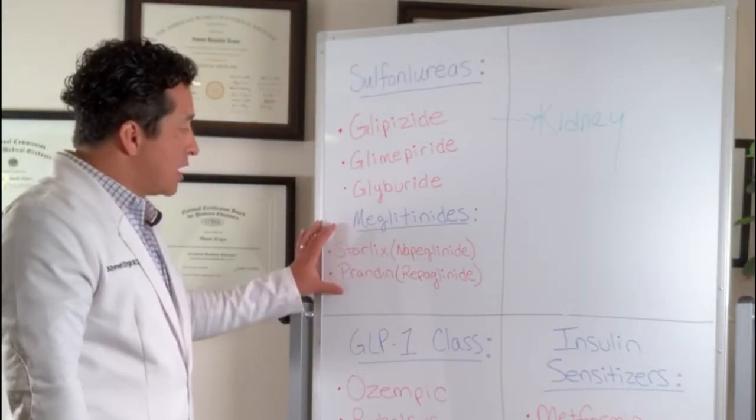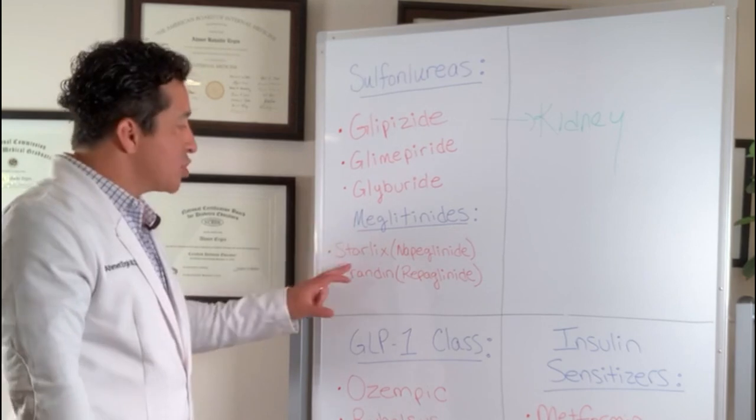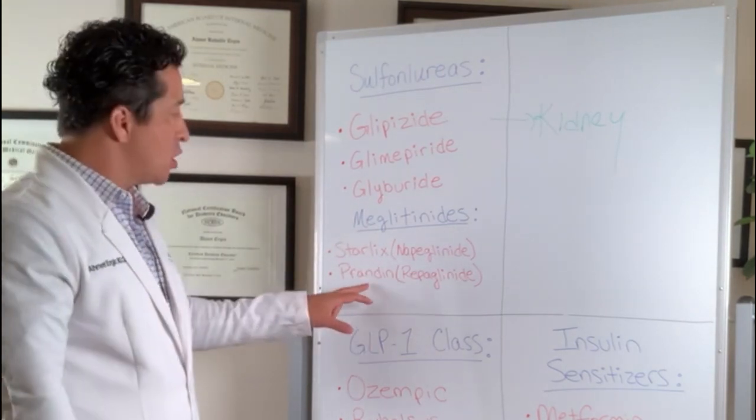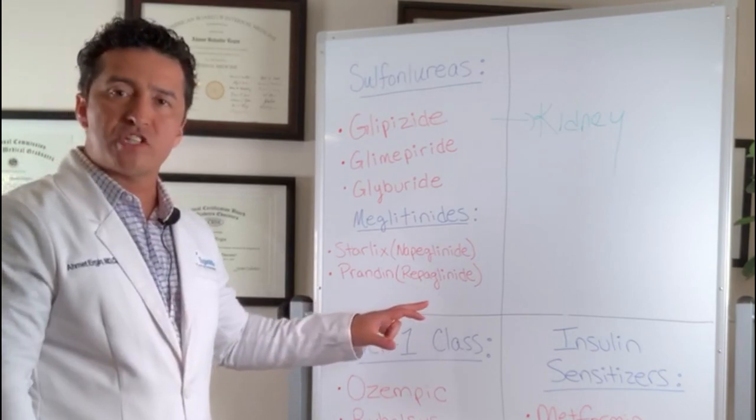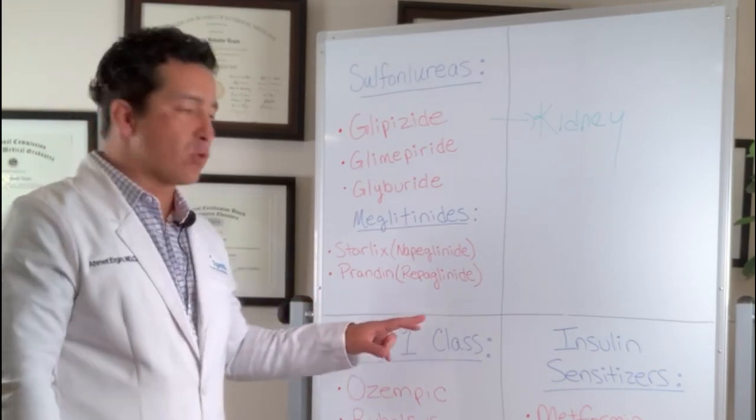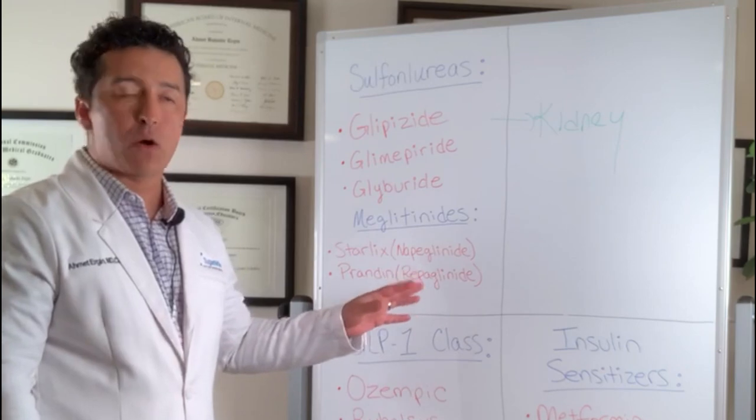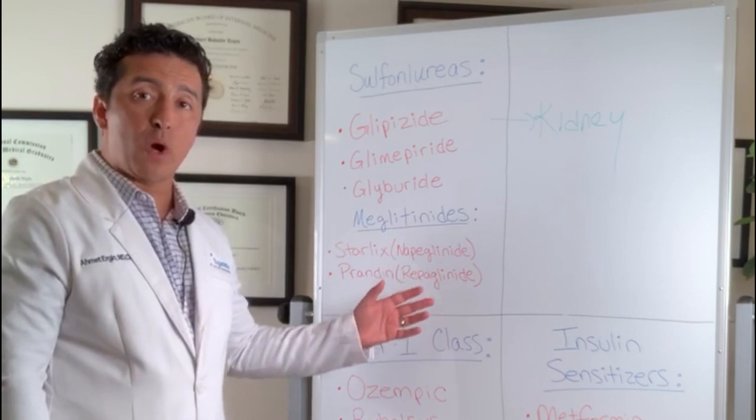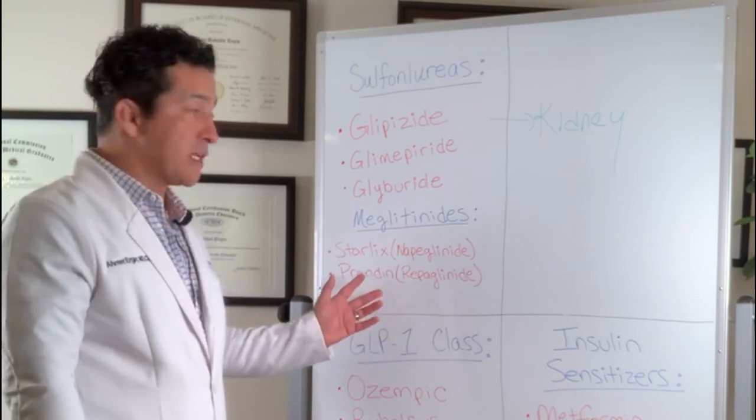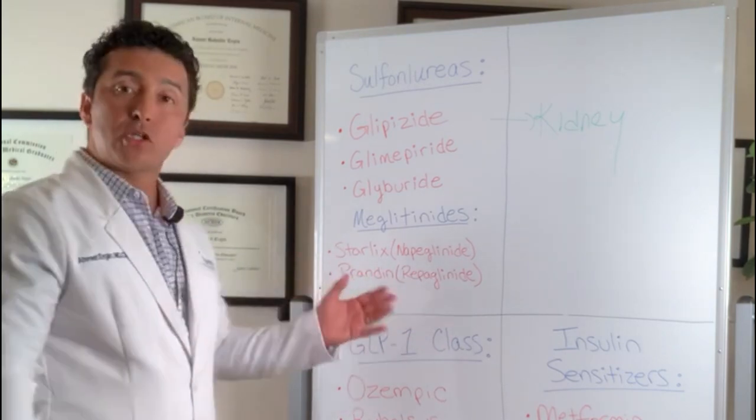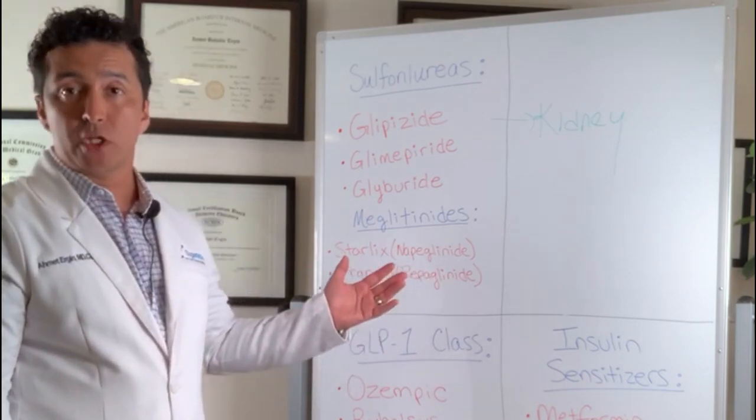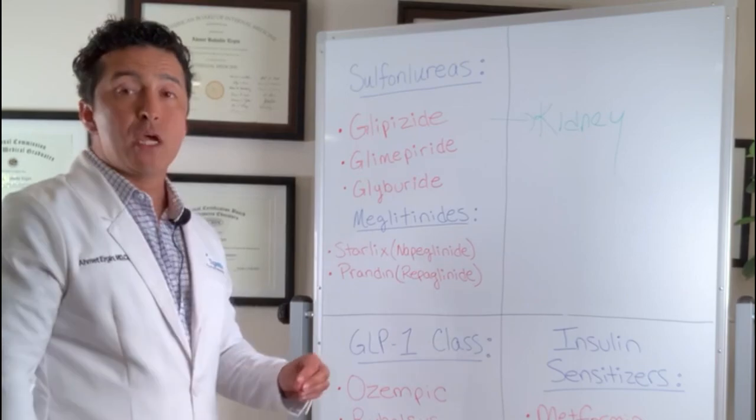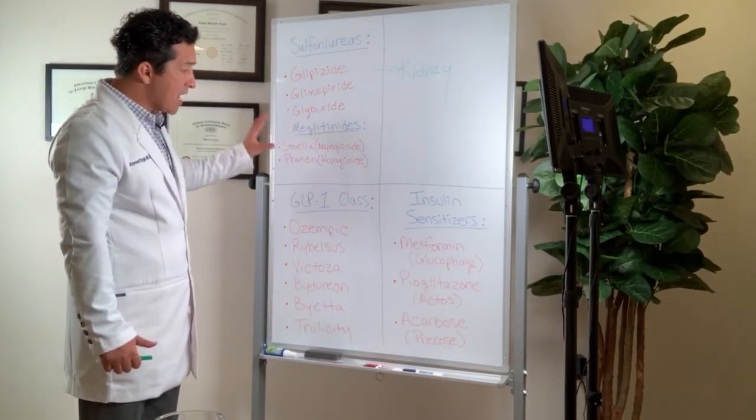Another big theory about the sulfonylureas, and the reason they are out of favor right now, is that it's believed that sulfonylureas can actually kill your pancreas. That is a theory. It is not 100% proven, but when they did studies comparing sulfonylureas with insulin sensitizers like metformin or pioglitazone, patients who were taking sulfonylureas ended up needing insulin way faster.